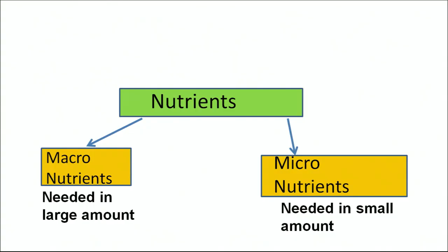Such as: this food item contains this much amount of energy, this much amount of carbohydrate, proteins, minerals, vitamins, etc. These are the nutrients which are found in food that keep our body functioning. Nutrients are divided into two major categories: macronutrients and micronutrients. Macronutrients, as the name suggests, are required in large quantities in our body. Micronutrients, as the name suggests, are required in small quantities in our body.